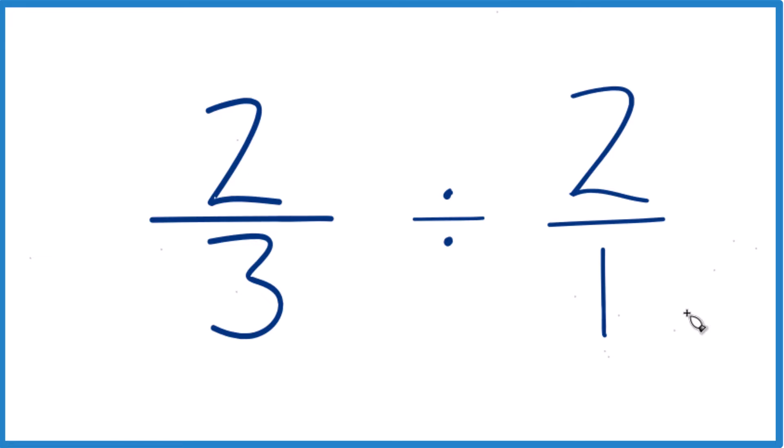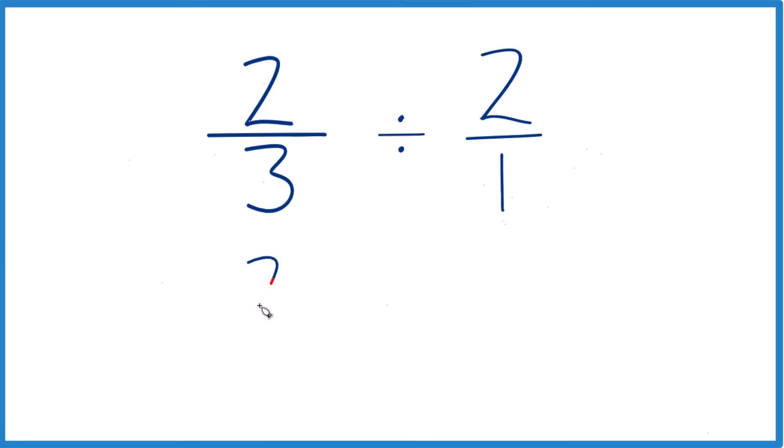But now everything's kind of lined up nicely. Now we can take our fraction, our two-thirds that we started out with, and instead of division, we're going to do multiplication, and we're going to multiply by the reciprocal of two over one.